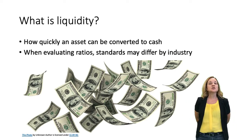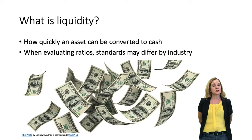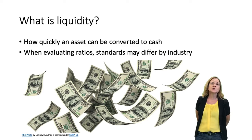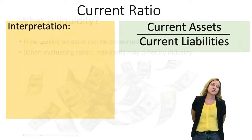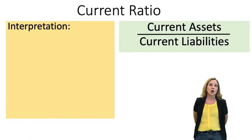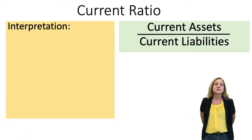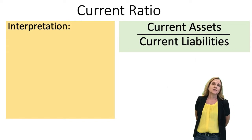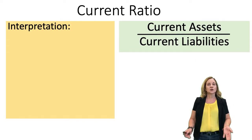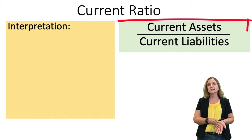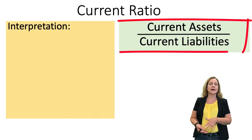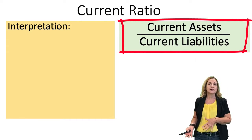So we're going to look at two ratios under liquidity. The first one is the current ratio, which is one of the most commonly used ratios. To calculate the current ratio, we take our current assets and divide them by current liabilities.